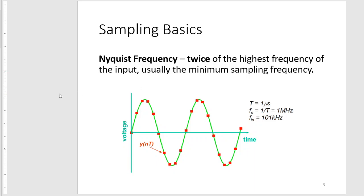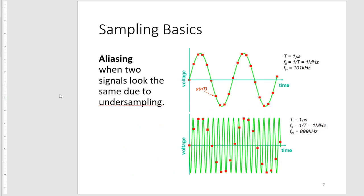To make more sense of this is the term aliasing. Aliasing is when two signals look the same due to undersampling or sampling under the Nyquist frequency. Here at the top is the 101 kilohertz signal, and here at the bottom is an 899 kilohertz signal. If we just sample at one megahertz, we can get exactly the same points from a 101 kilohertz signal.